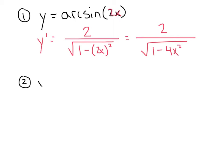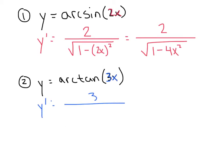Number 2: arctan(3x). Here u is 3x, so du is 3. Our rule says the derivative is du over 1 plus u squared, giving us 3 over 1 plus (3x)². Of course, we can square that out and write 1 plus 9x² in the denominator.